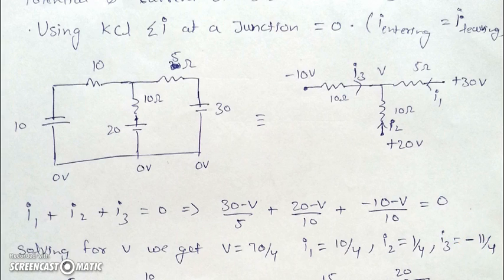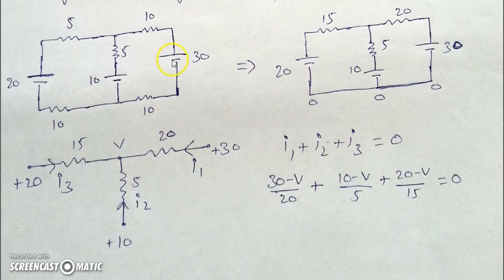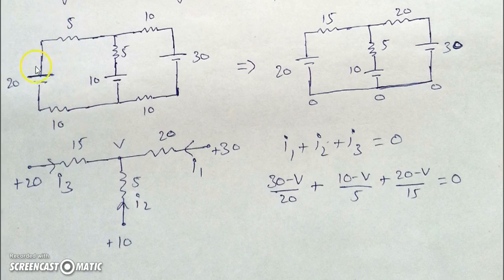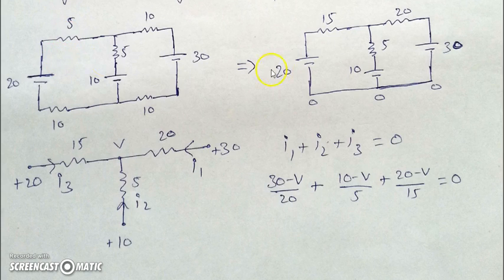Here is another example where we need to find the current through the resistances. The 5-ohm and 10-ohm are in series because they carry the same current in that loop, and the two 10-ohm resistors are also in series. We can add them together and place them on one side of the battery. The 10 and 5 give 15 ohms, and the two 10s give 20 ohms. The battery polarity remains unchanged.